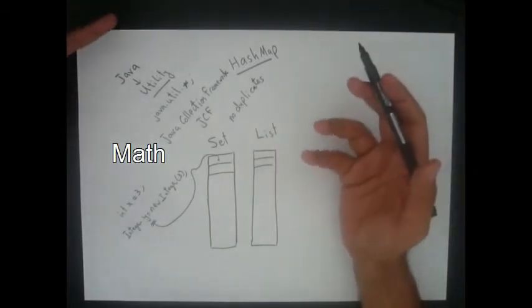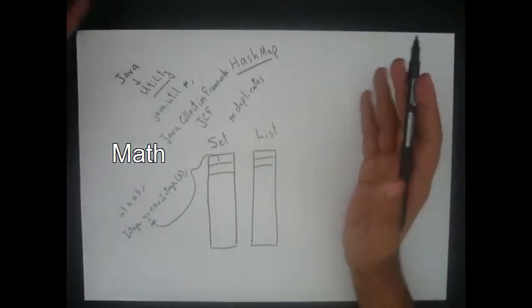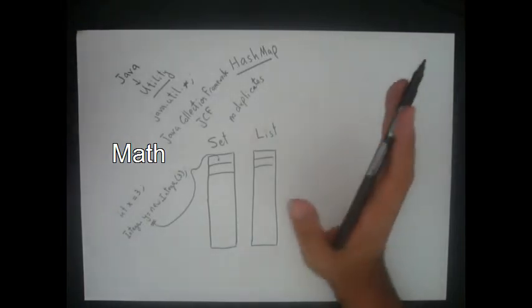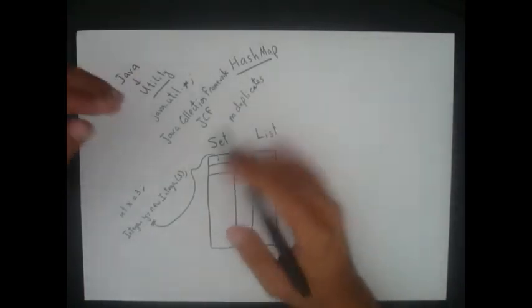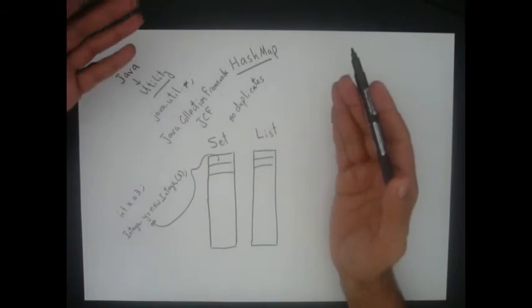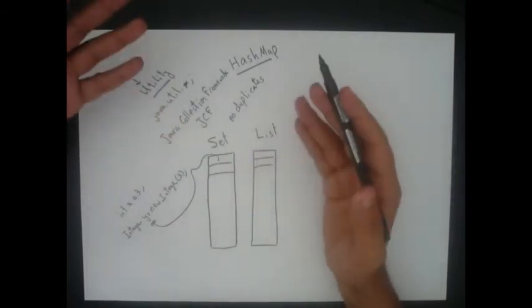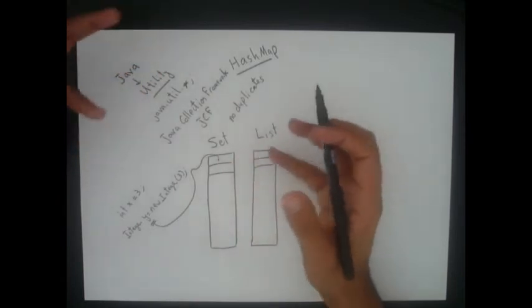In math, we don't have in this set any repeated number. So normally a set is a group of values or a group of objects that has all unique values.